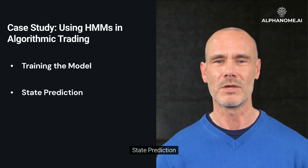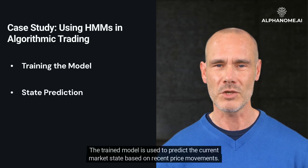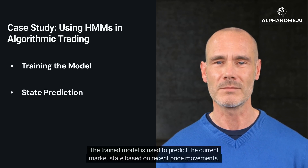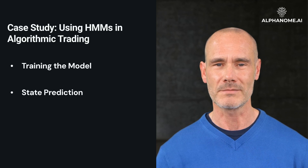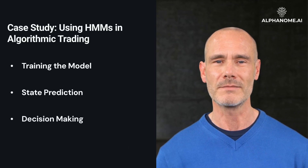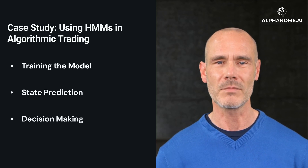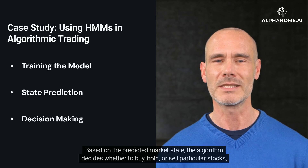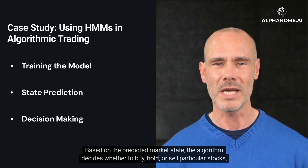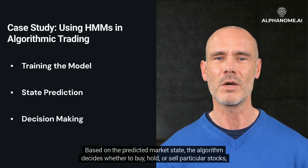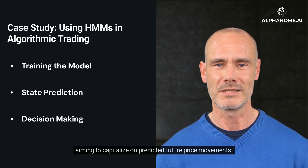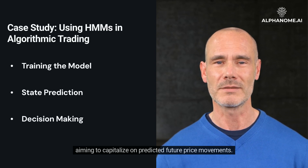State prediction: The trained model is used to predict the current market state based on recent price movements. Decision making: Based on the predicted market state, the algorithm decides whether to buy, hold, or sell particular stocks, aiming to capitalize on predicted future price movements.